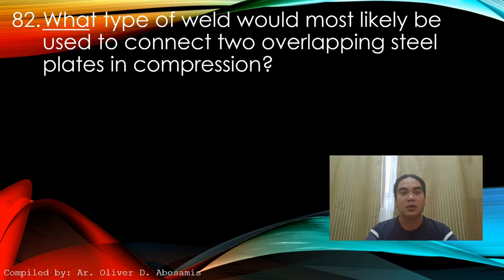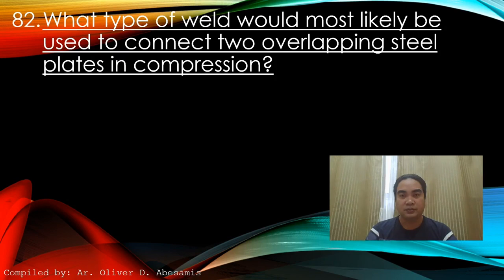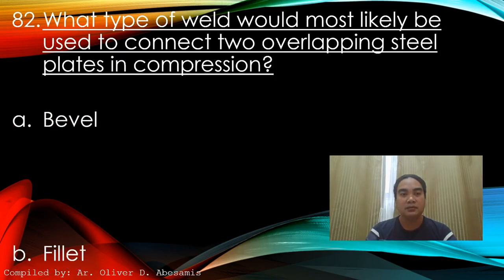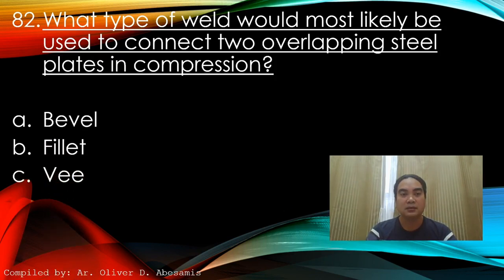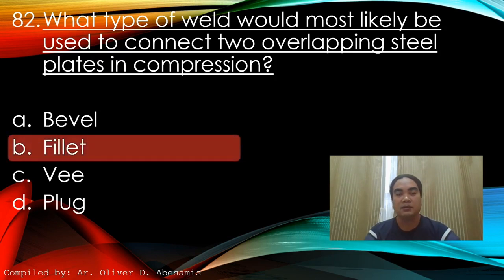Question 82: What type of weld would most likely be used to connect two overlapping steel members in compression? A) Bevel, B) Fillet, C) V, D) Plug. Answer: B) Fillet.